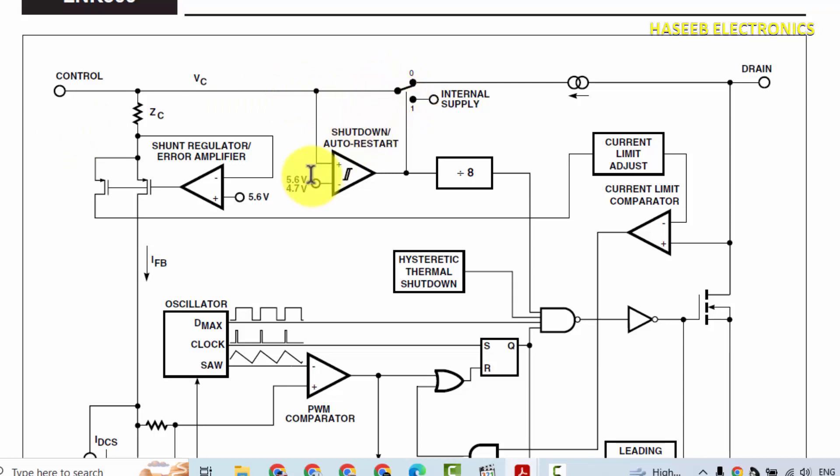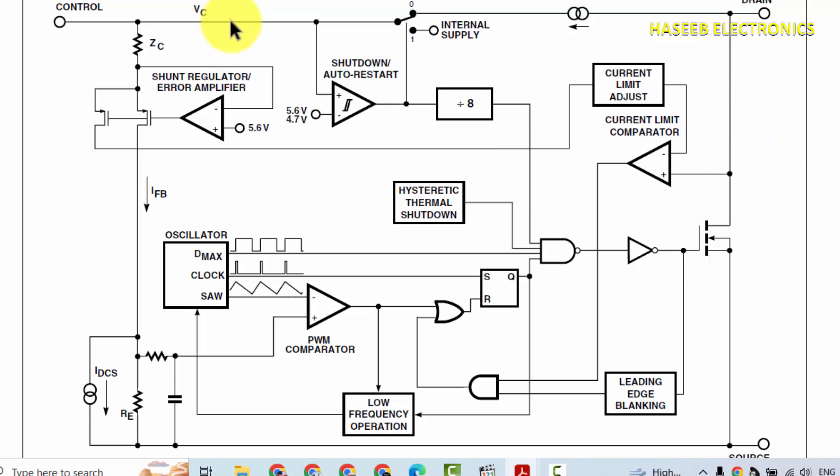When the voltage will reach 5.6 volts, this IC will start switching. When it starts switching, it will maintain its voltage. If the voltage drops below 4.7 volts, this IC will go into restart mode. It will turn off and then start again.